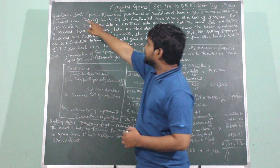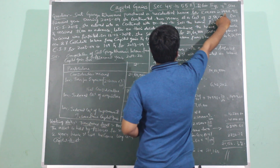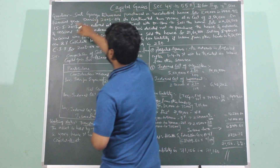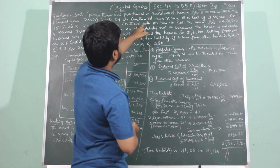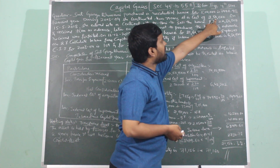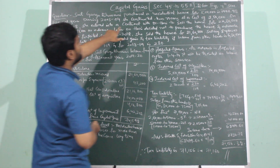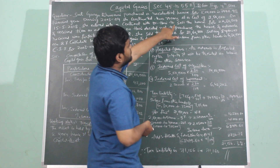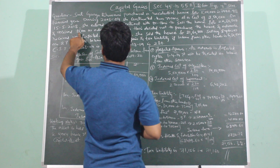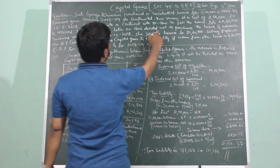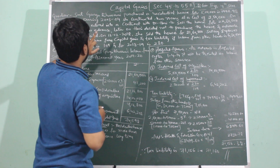Here is the question. Srimati Ganga Bhavani purchased a residential house for 5 lakhs in the financial year 1997-98. During the year 2003-2004 she constructed two rooms at a cost of 2 lakh 50 thousand. On 15th May 2018 she entered into a contract with Dr. Hari to sell the house for 22 lakhs 30 thousand and received 75 thousand as advance.